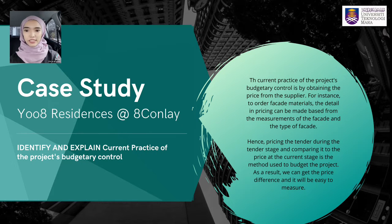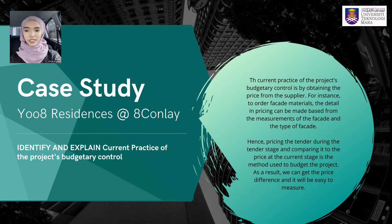The first problem is that supply costs can increase. During the Movement Control Order (MCO) due to COVID-19, there was a drastic increase and changes in material prices from suppliers. The second problem is that labour costs increased. During the MCO, the project was delayed for almost one year and management cannot claim variation orders (VO). This caused absorbed and increased labour costs.